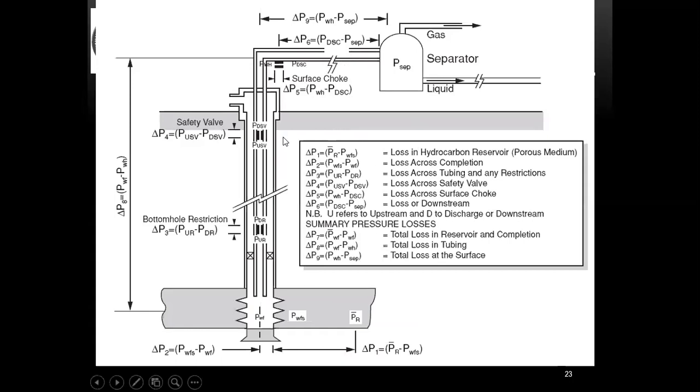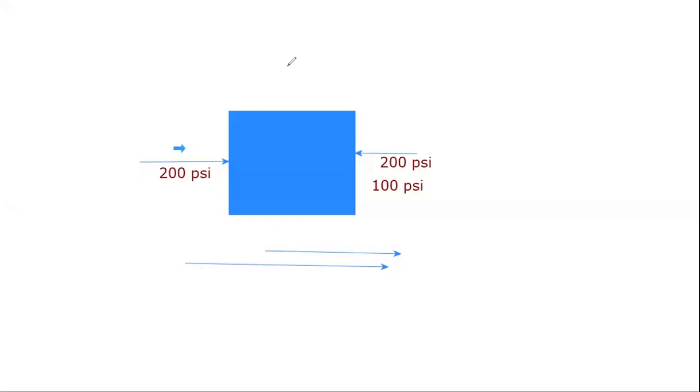Now let's go ahead. In order to understand your production system, we identify specific points called nodes to analyze the system performance.